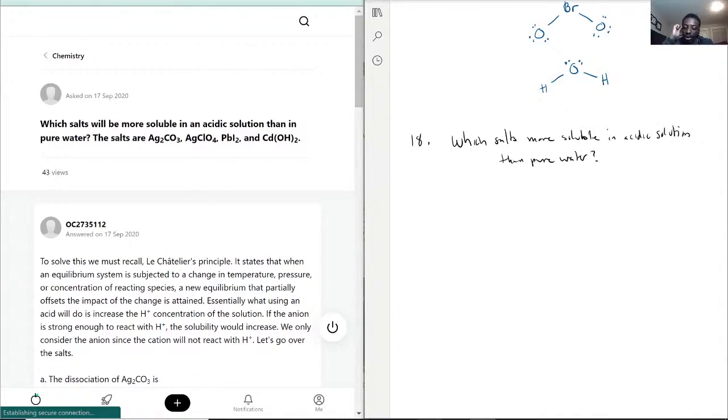I'm going to write down each one and write down their formula of how they would break down. This helps you understand the question easier. So Ag₂CO₃ dissociates into 2Ag⁺ plus CO₃²⁻. Same thing, AgClO₄...